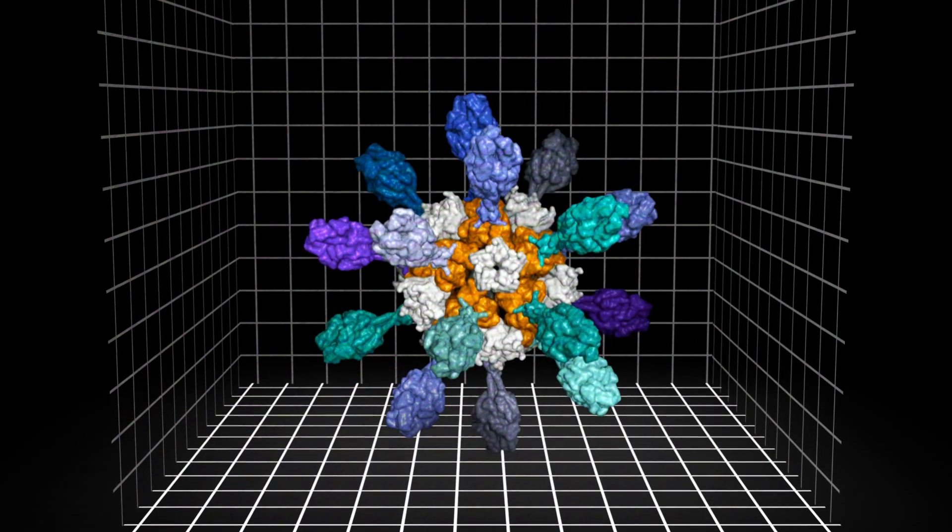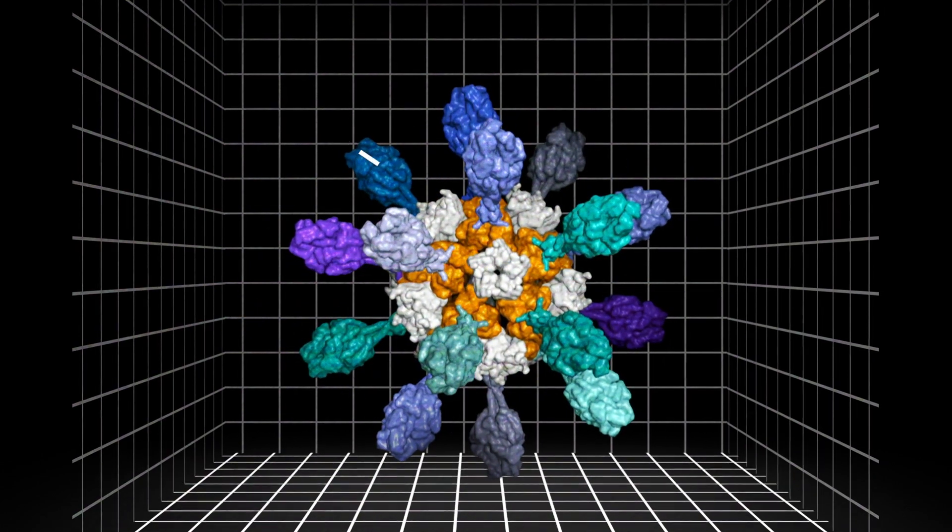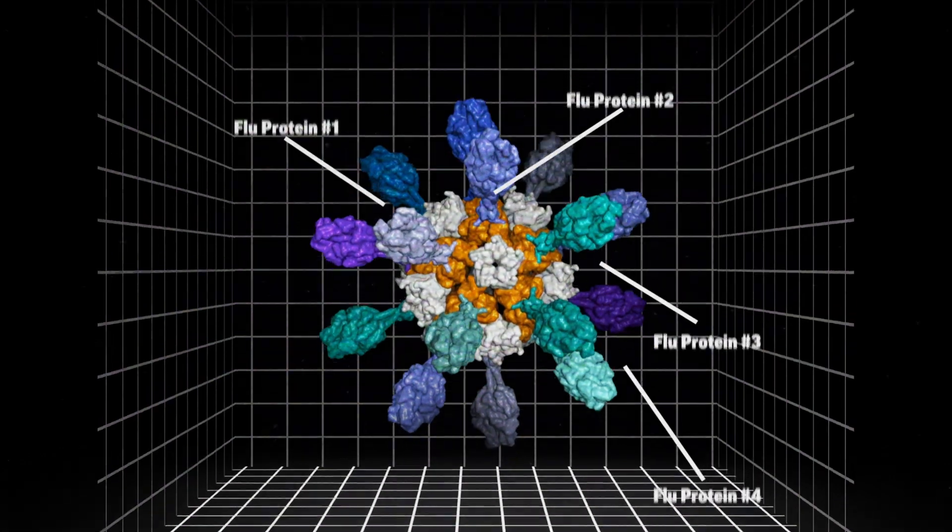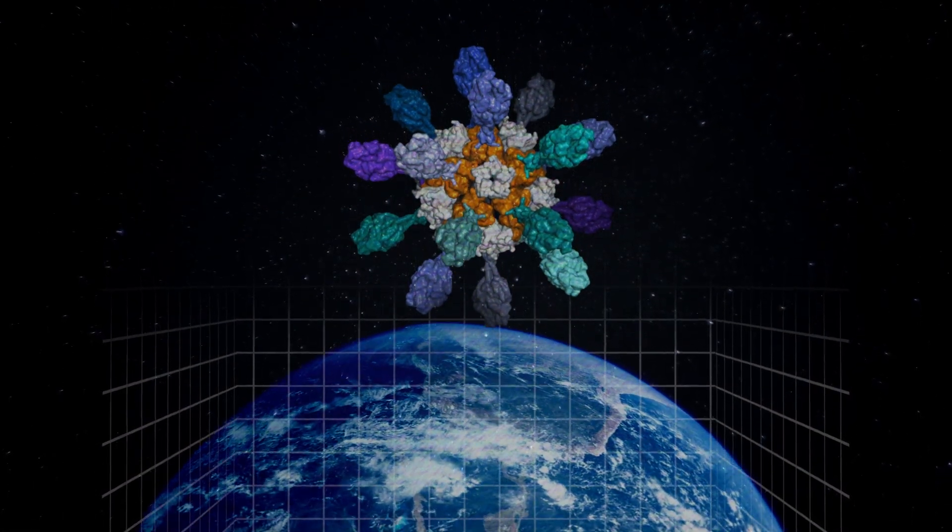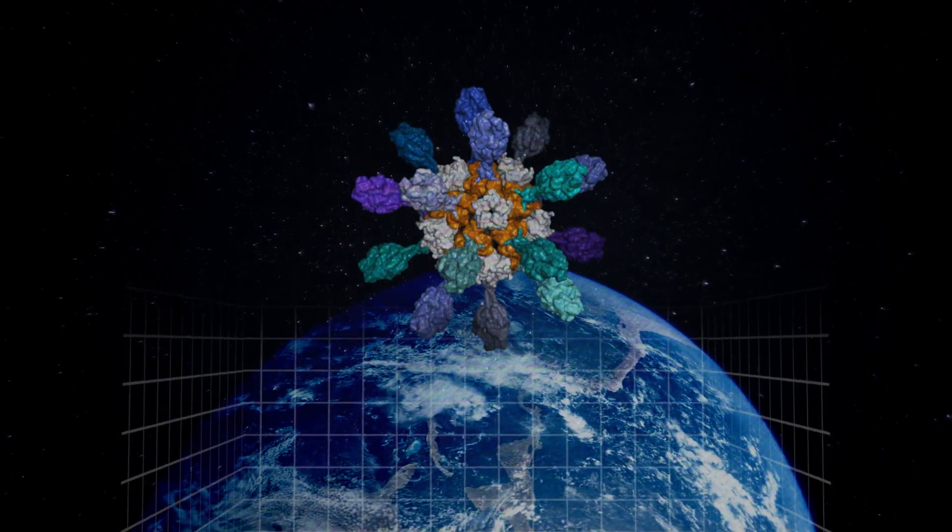But now look at this protein because this could be even more revolutionary. Looks similar, right? Only this protein is made up of several virus proteins. And in this case, these are flu viruses from around the world, meaning you could create a universal vaccine, a vaccine that could target multiple strands of a virus at once. It could be administered once and never needed again for an entire lifetime.